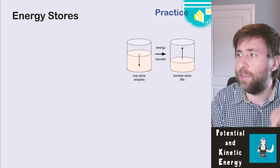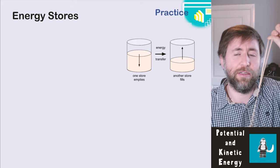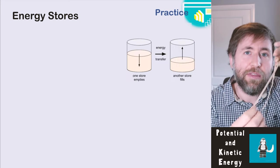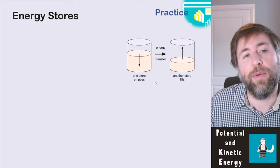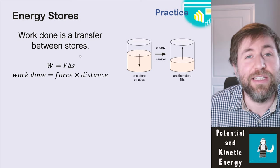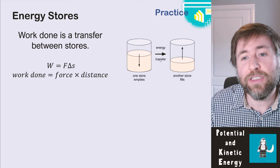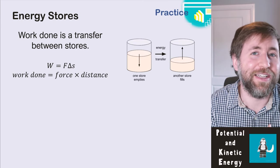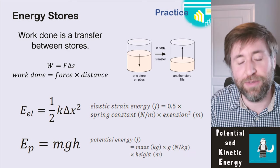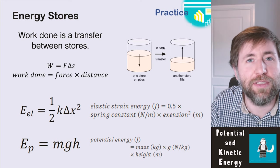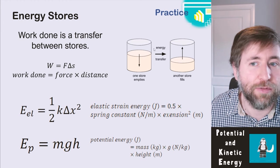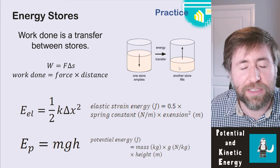We start with energy stored in the elastic store of the elastic band. Then there's an energy transfer — the force pulls the elastic band back to its original shape, and the energy is now stored in the kinetic store. When we talk about energy stores and transfers, we want one store emptying and energy moving by doing work into another store. Here, we've taken energy from the elastic store and transferred it to the gravitational store because the object is now up in a gravity field. It's the exact same energy.